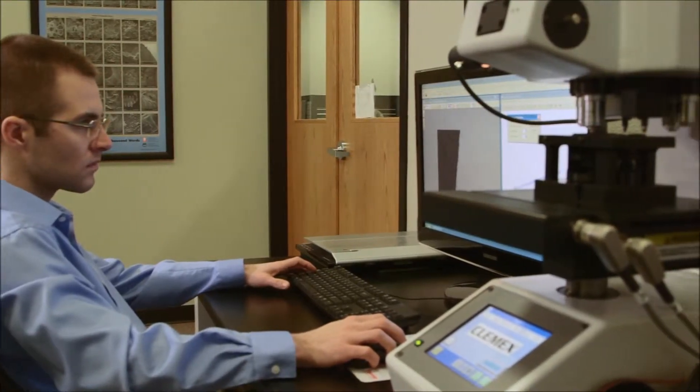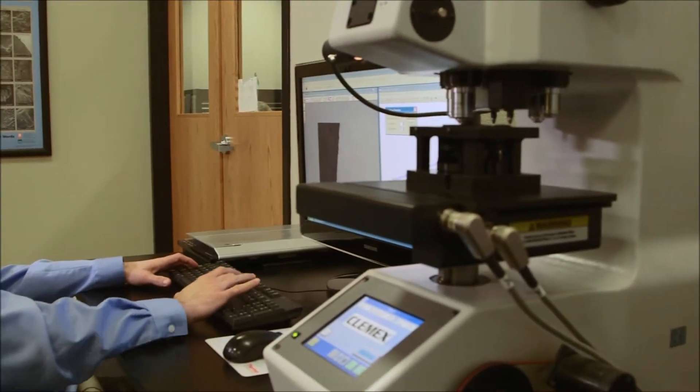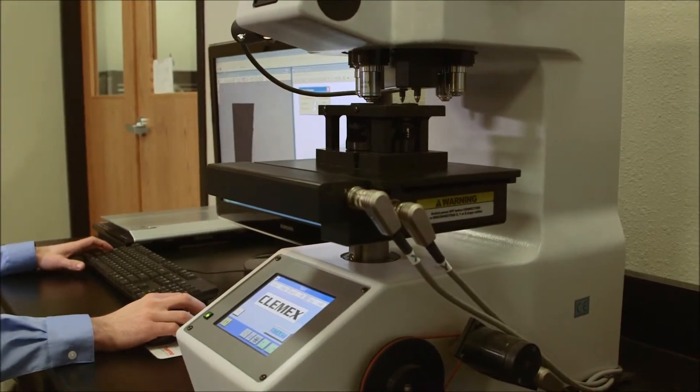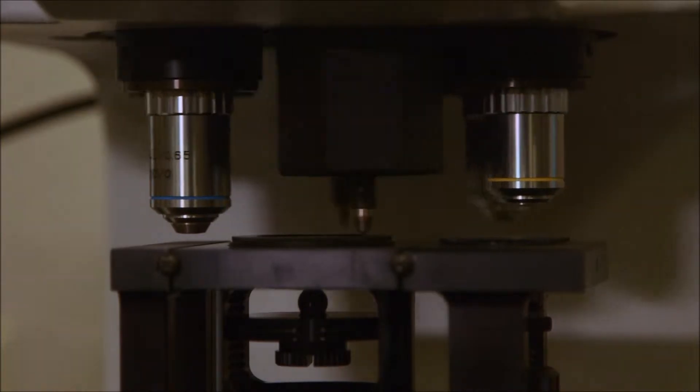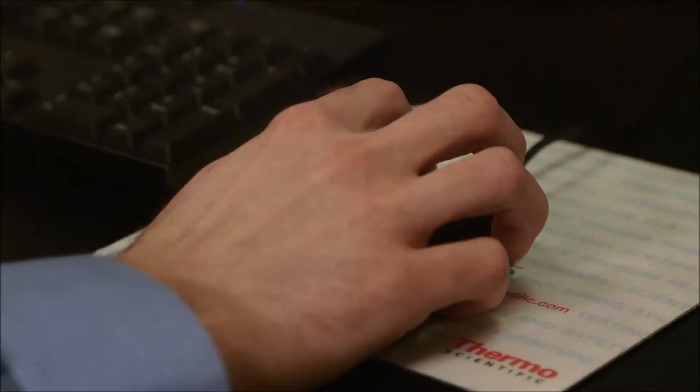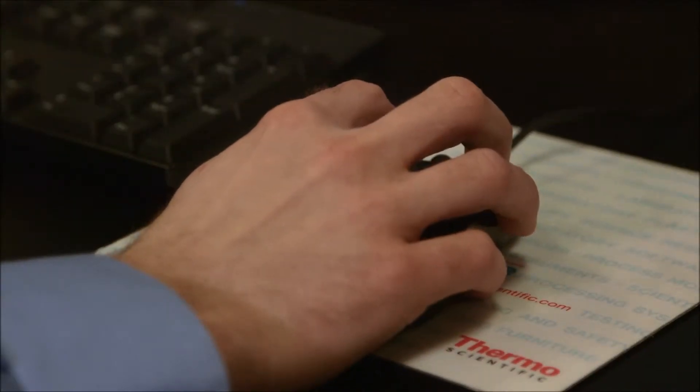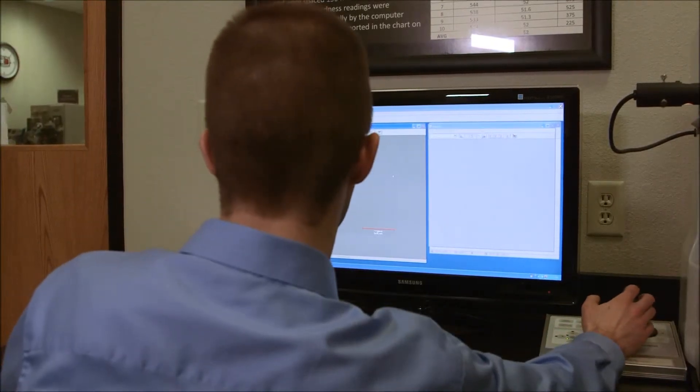So what we have is we have a Clemex automatic micro hardness tester that can go in and identify these different phases that make up our coating. So this could be our carbide materials that provide the extreme abrasion resistance, or it could be the matrix material that we use in between to ensure that that coating doesn't chip off in the field.